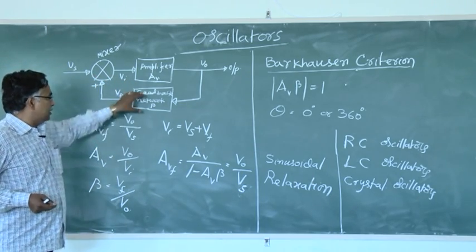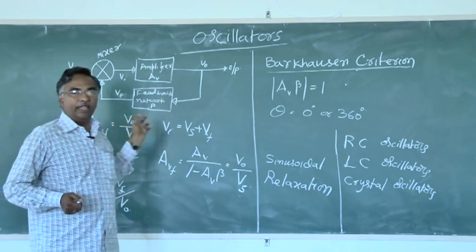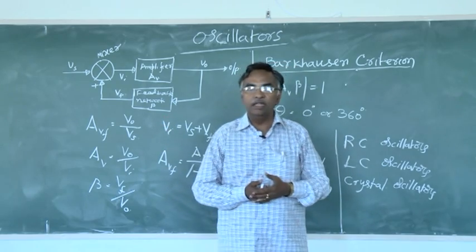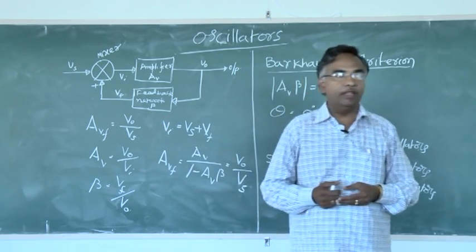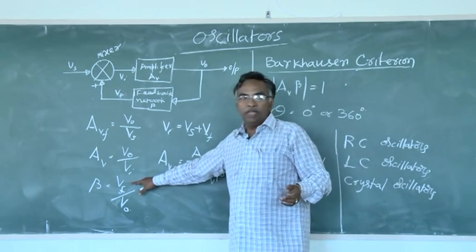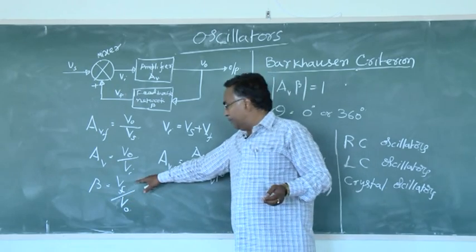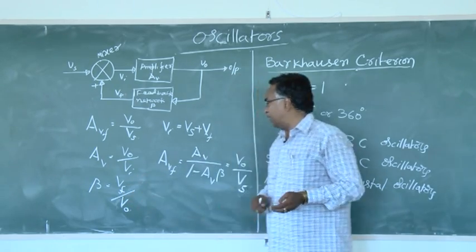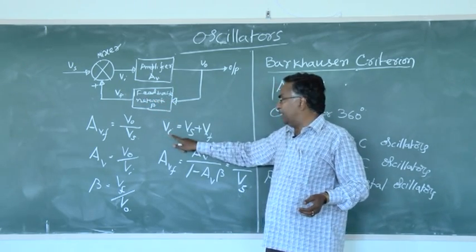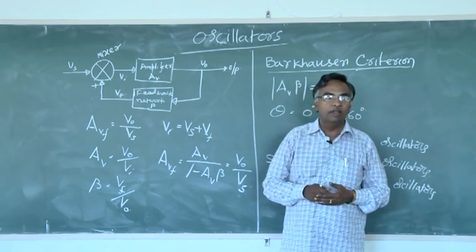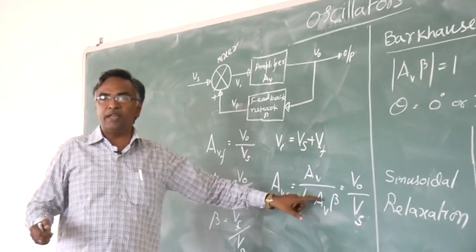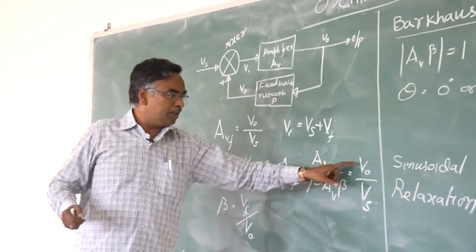Here, AVF means voltage gain with feedback, which is equal to V_out by V_s. Voltage gain without feedback is V_out by V_i, and the feedback factor beta is equal to V_f by V_out. Since it is positive feedback, V_i is equal to V_s plus V_f. After solving these equations, we get AVF is equal to AV by (1 minus AV·beta), and that value equals V_out by V_s.